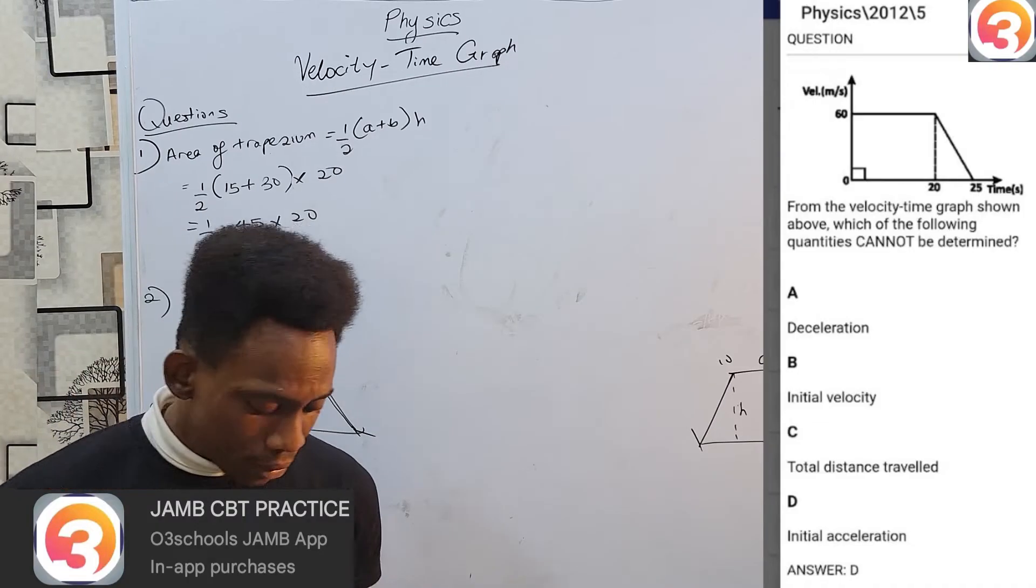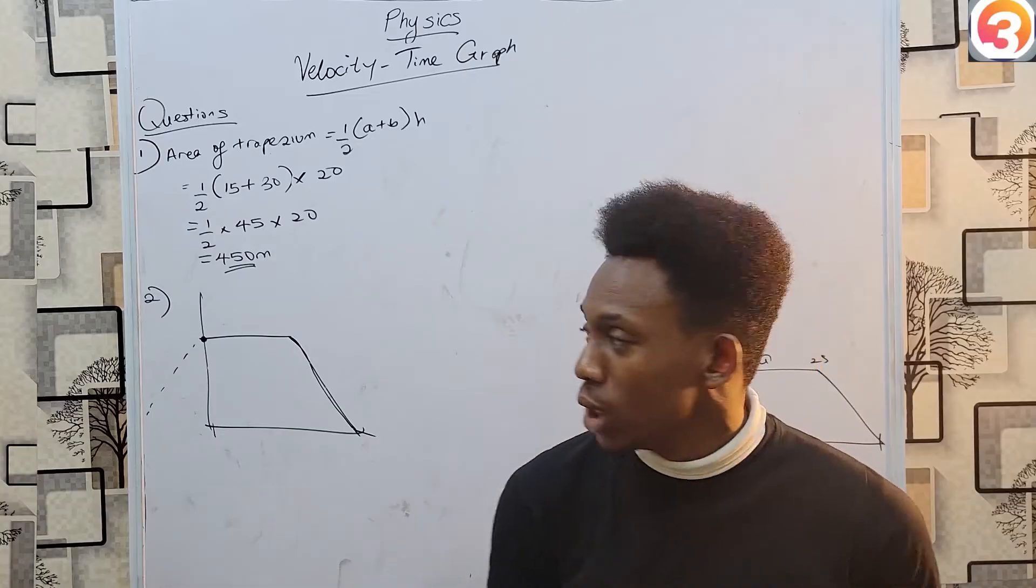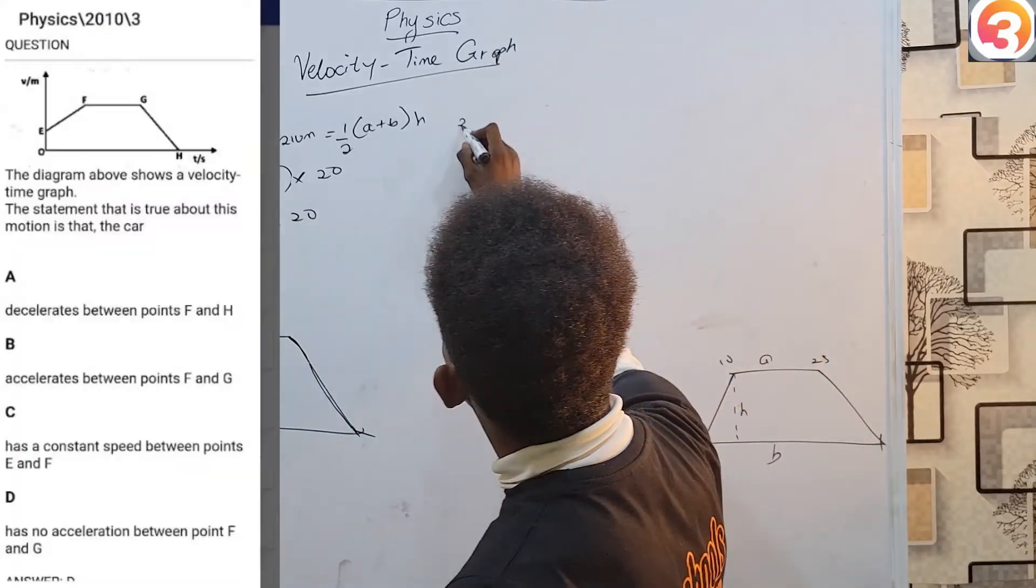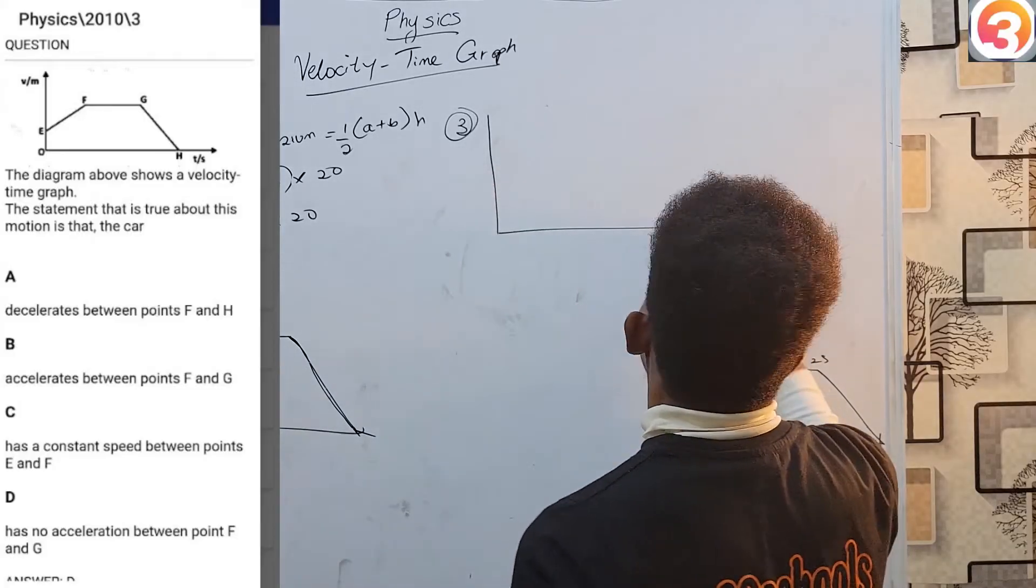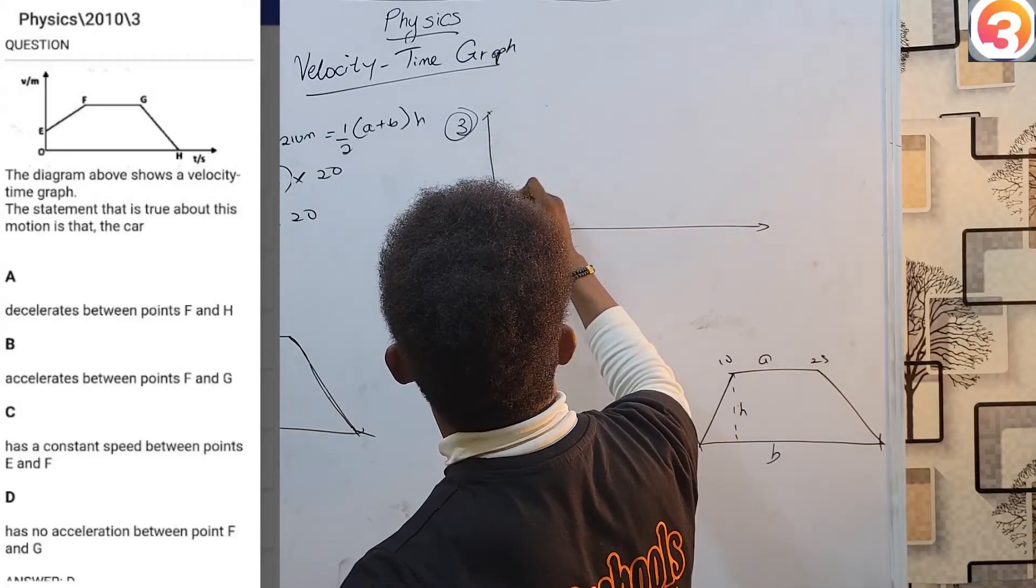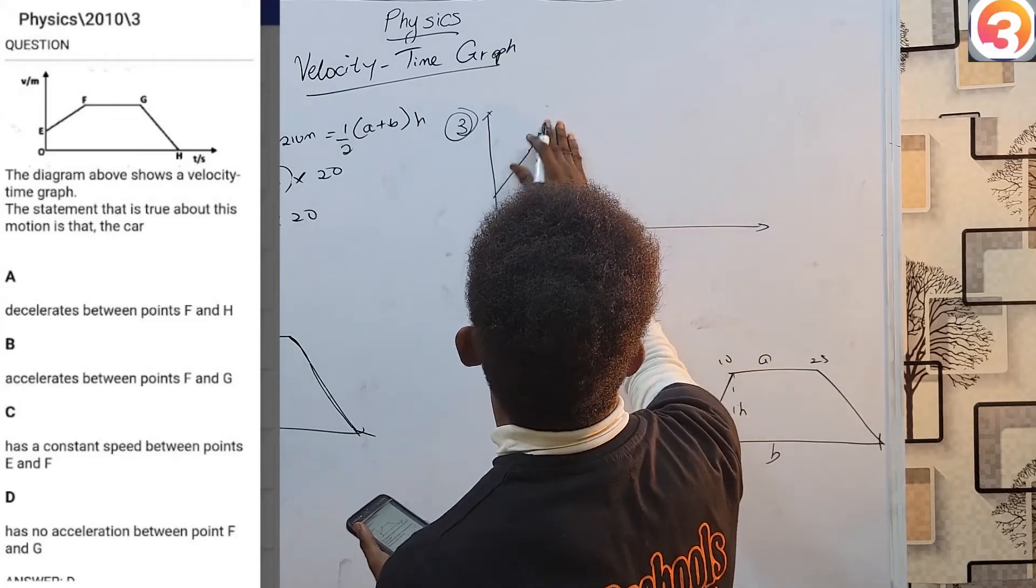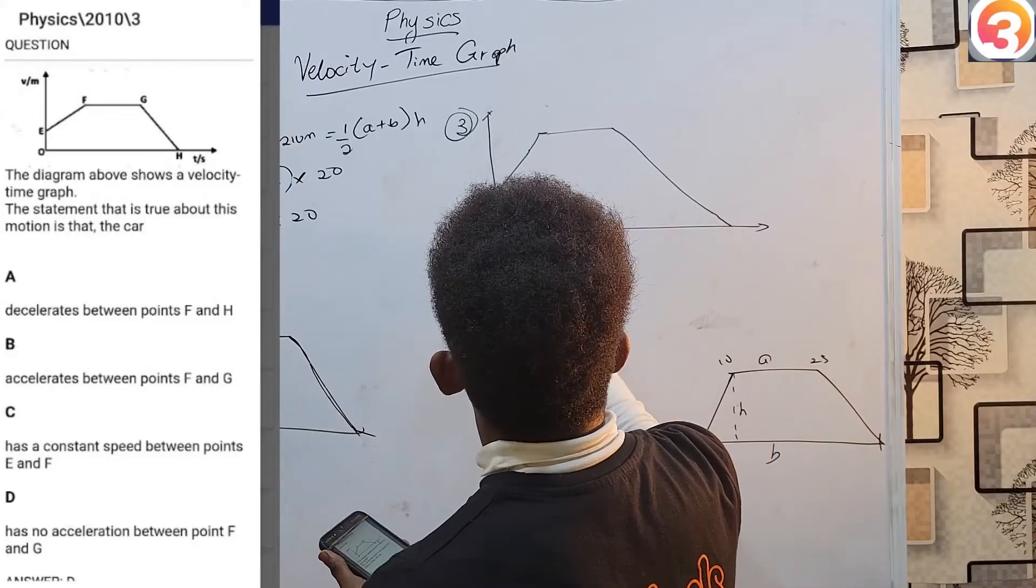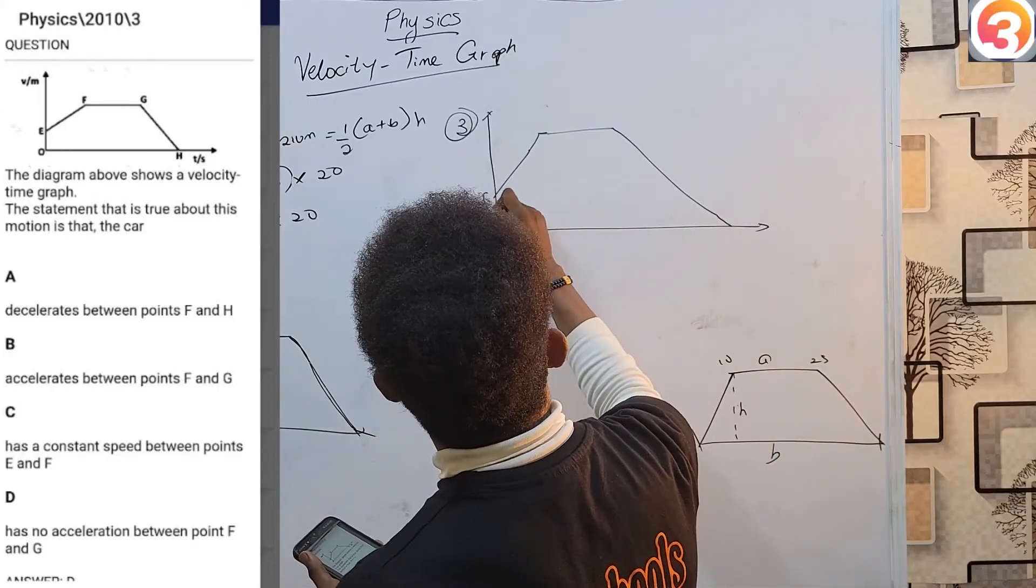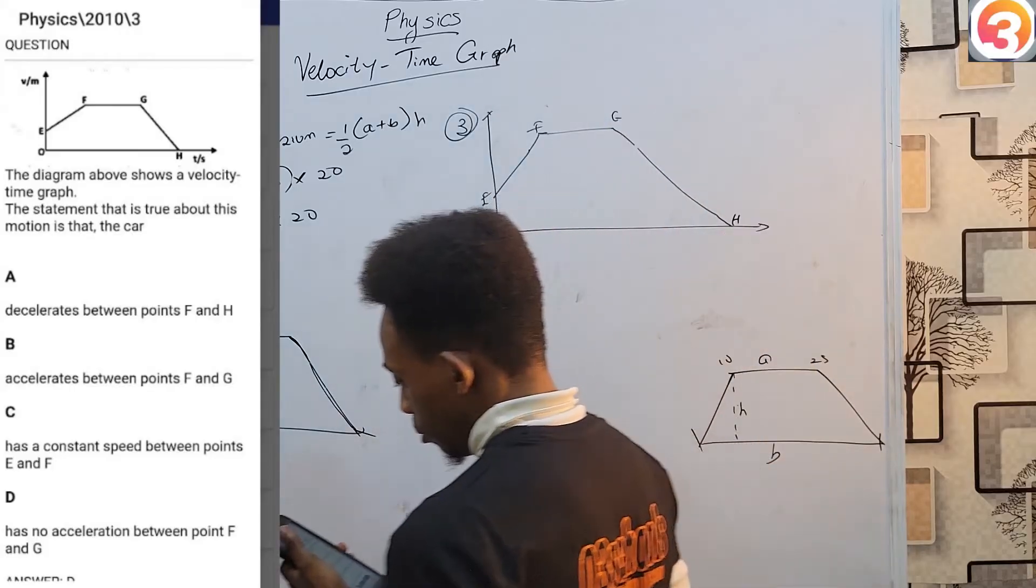Very very easy. Tiny bits of reasoning. Then, we go to 2010, question 3. And again, we have yet another diagram that we have been asked to analyze. This one looks something like this. Then it goes. And then this is horizontal. Don't mind my drawing. And then it comes straight down. This is O, E, F, G, and H.